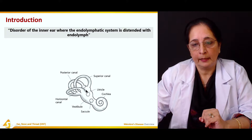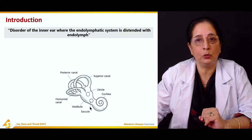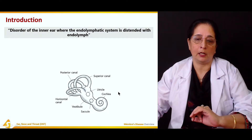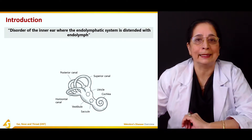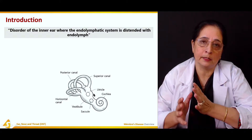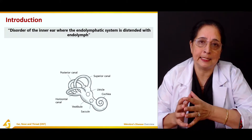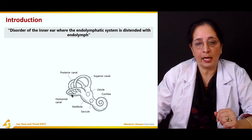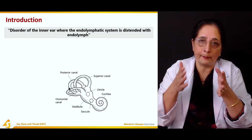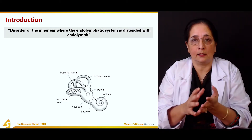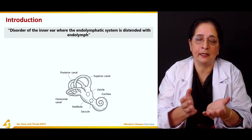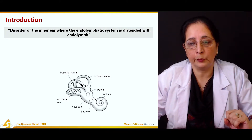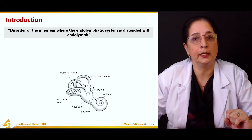The inner ear or endolymphatic system includes the cochlea — a snail-shaped structure — then the vestibule, which contains the saccule and utricle, also known as the otolith organs, which are very important structures for maintaining balance. Then we have the semicircular canals: horizontal, posterior, and superior.